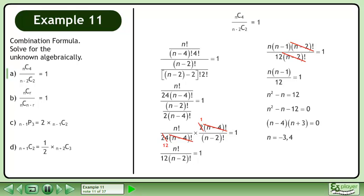The solutions to the equation are n equals negative 3 and 4. Reject negative 3 because we can't use negative numbers in combinations. The answer is n equals 4.